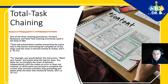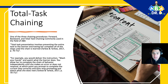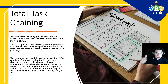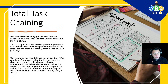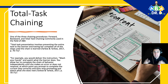Total task chaining is one of the three chaining procedures that we commonly use in the field of behavior analysis. The other two consist of forward chaining and backward chaining, and they're very common in our field. We utilize these particular chaining procedures to teach self-help skills primarily.